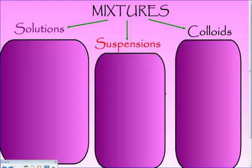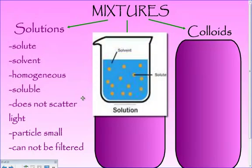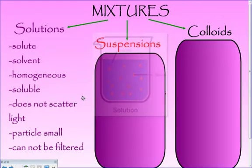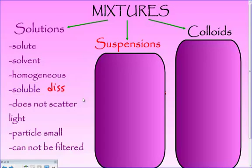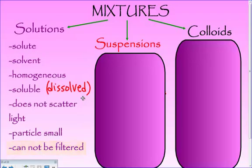If you look more in depth at these three categories, let's first zone in on solutions. Solutions have a solute and a solvent, which makes them unique compared to the other two groupings. They are homogeneous, meaning their particles are evenly distributed — if I take a sample from the top and the bottom, it's going to be the same. The solute is evenly distributed in the solvent. They're soluble, which means the solute can dissolve into the solvent — when you see the word soluble, think of the word dissolved. They do not scatter light because their particles are very small, and you can't filter them. If you had salt water and tried to send it through a filter, you'd get salt water coming out at the bottom.